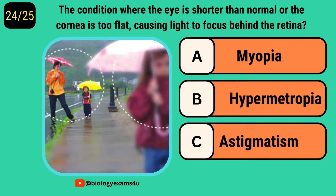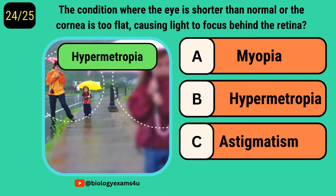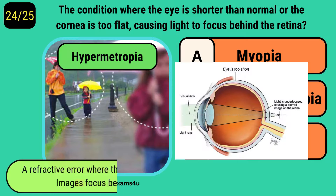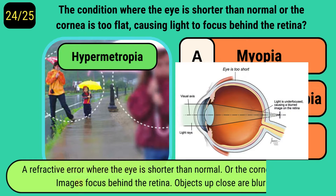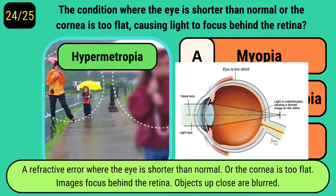The condition where the eye is shorter than normal or the cornea is too flat, causing light to focus behind the retina, is called? It is called hypermetropia, a refractive error where the eye is shorter than normal or the cornea is too flat — images focus behind the retina and objects up close are blurred.